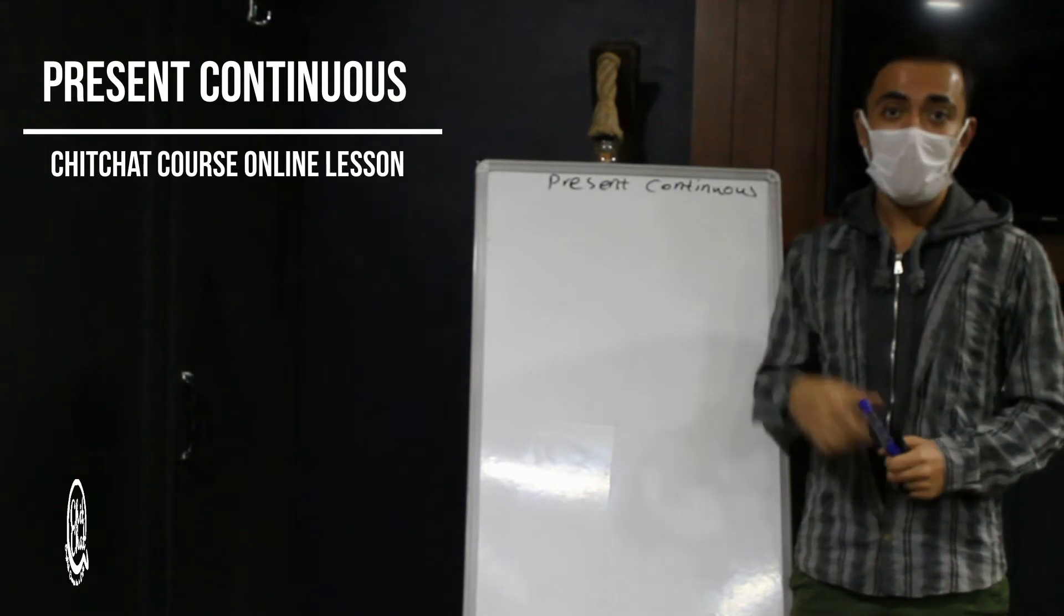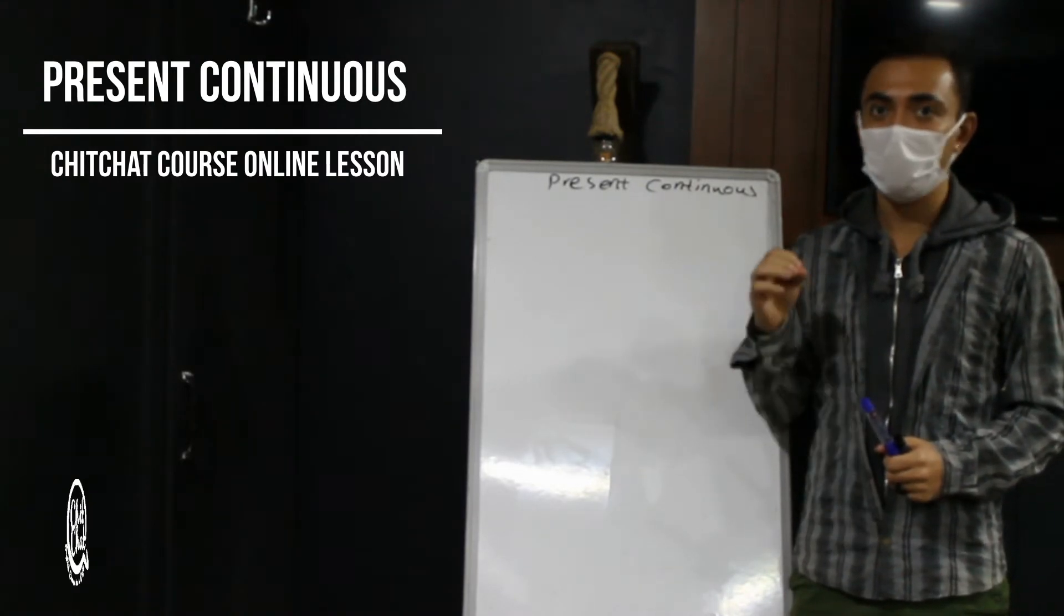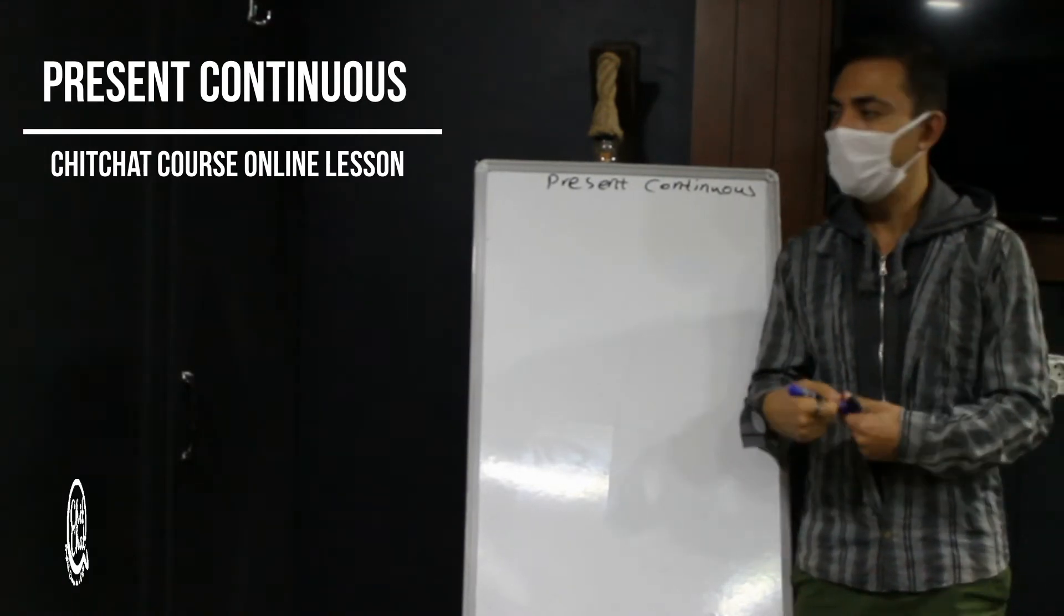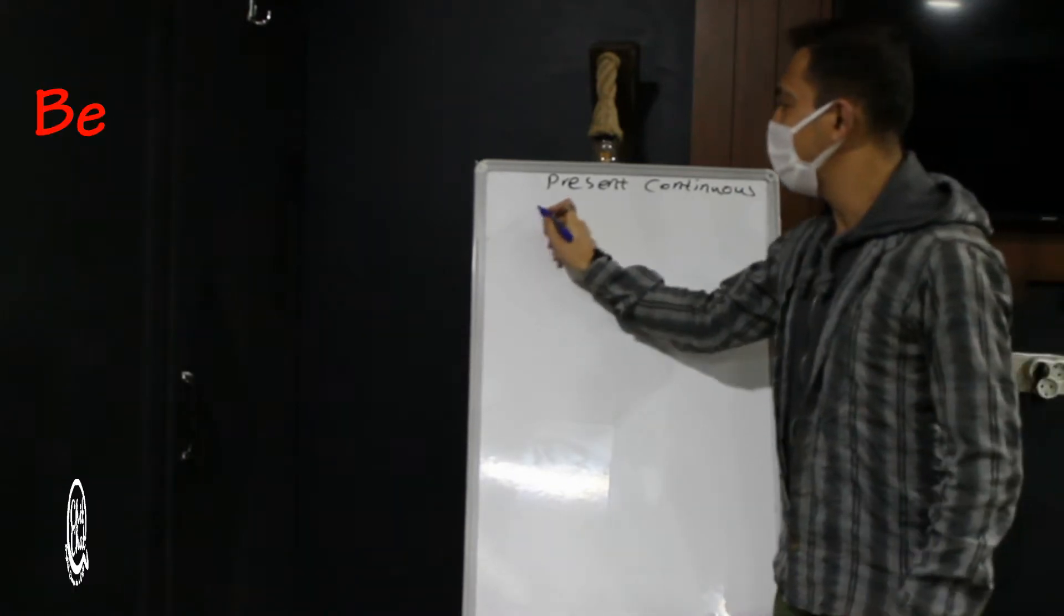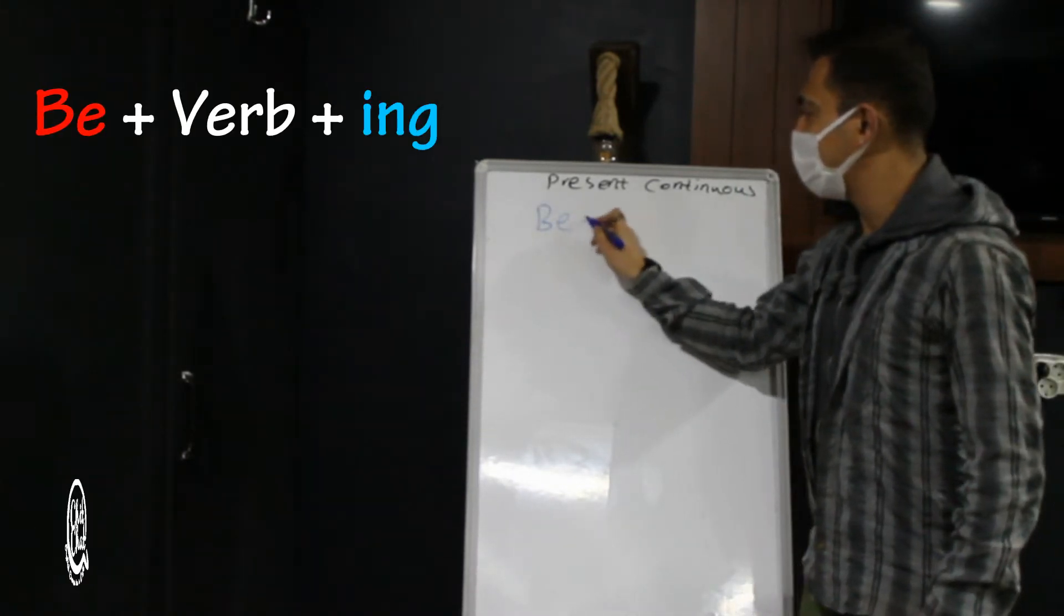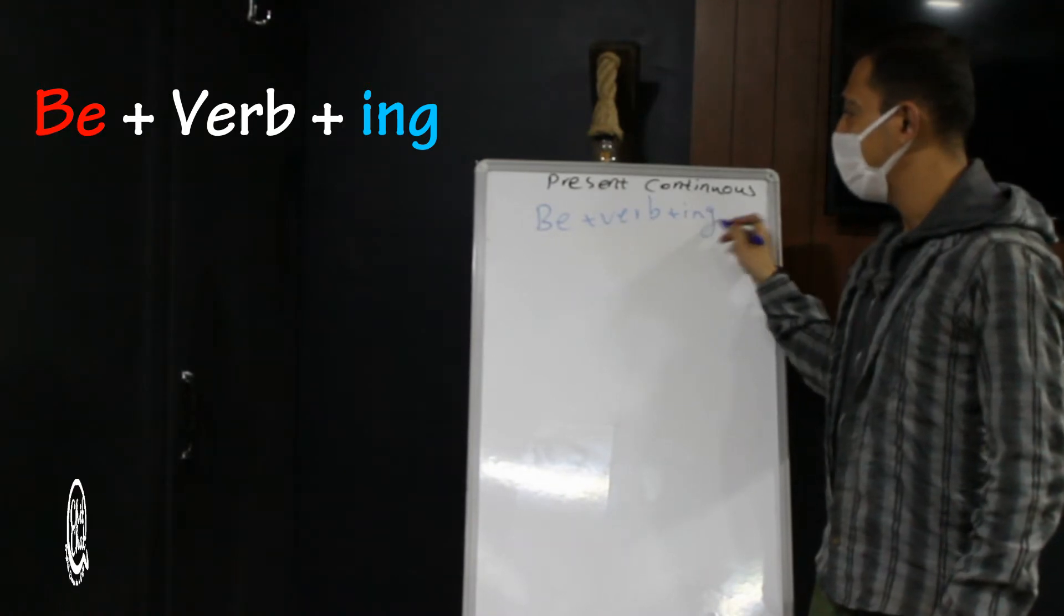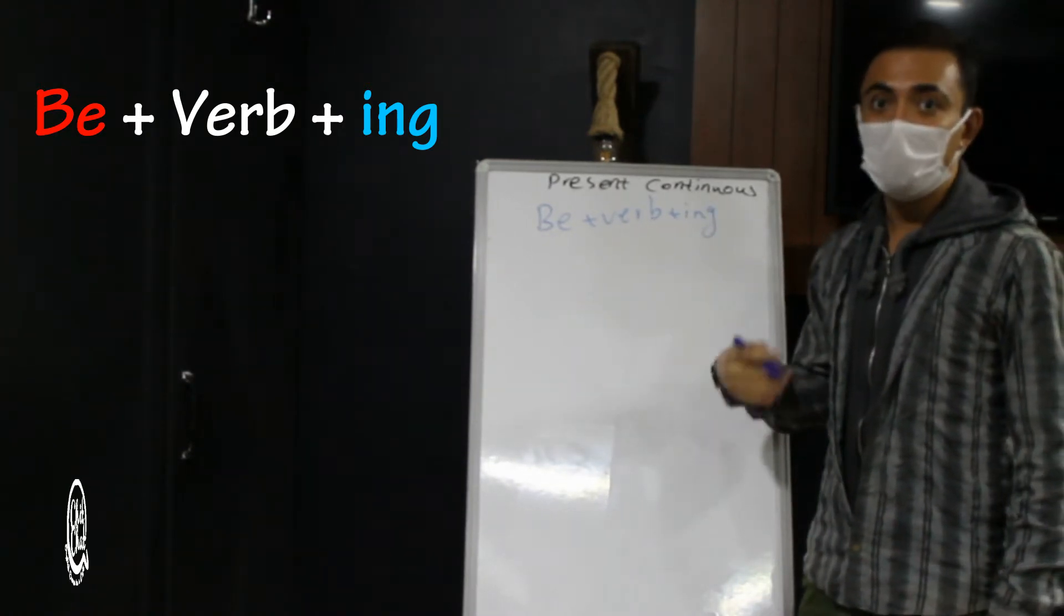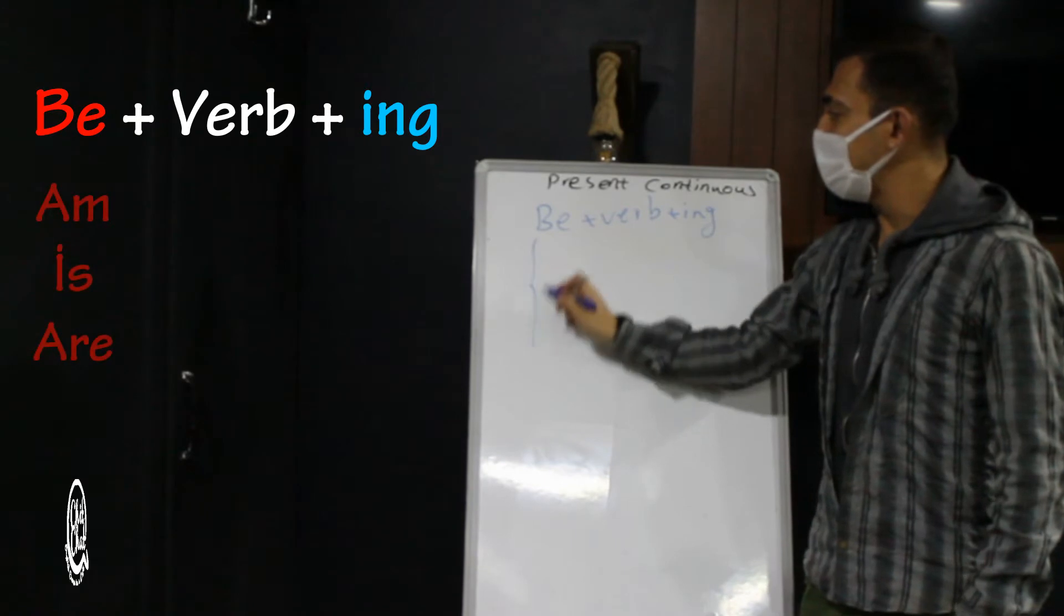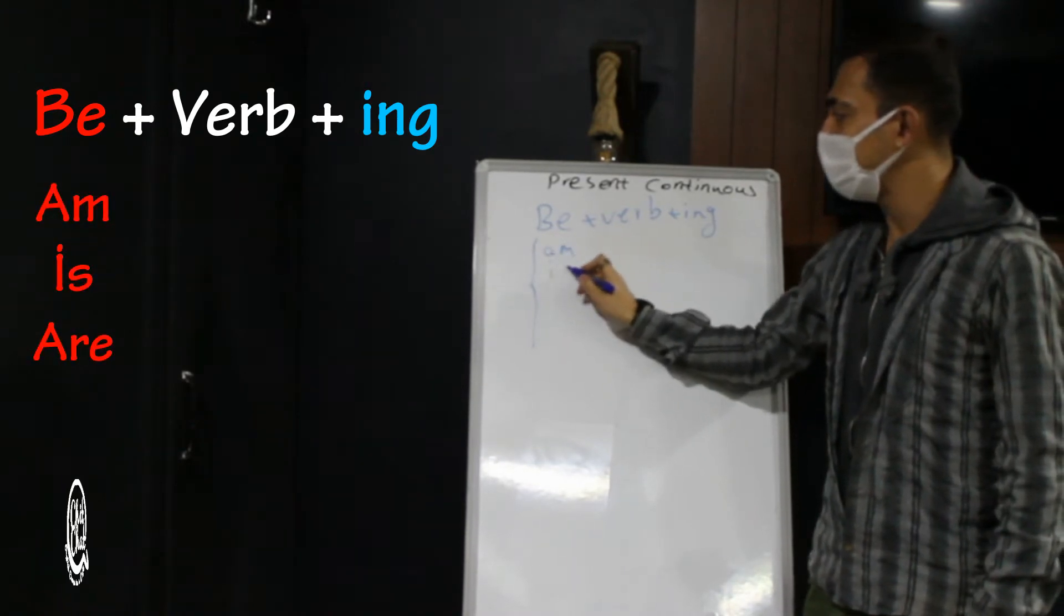The question is, how can we make present continuous tense? It's very easy, guys. We use be plus verb plus ing. But remember, be doesn't mean be. Be is am, is, are.